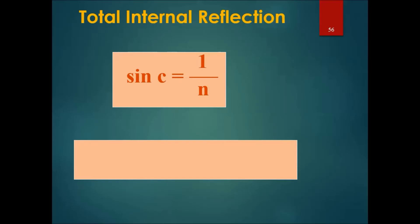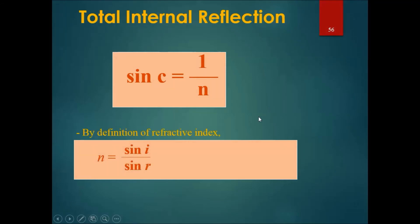The formula to get total internal reflection is sin C equals to 1 over N, where N is the refractive index. It's quite simple, because there are only two variables, C and N. If you have C, you can find N. If you have N, you can find C. This is produced by using the definition of refractive index: N equals to sin I over sin R. So if the bigger angle is 90 degrees, sin 90 is equal to 1, and therefore N is equal to 1 over sin C.